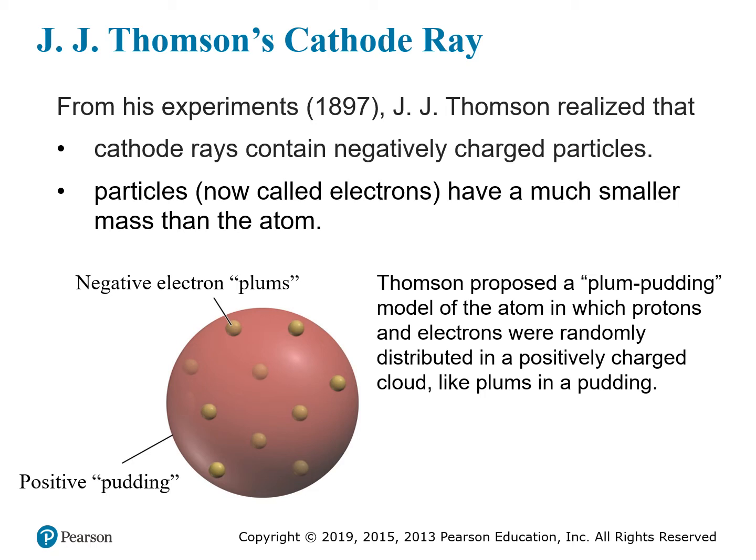Based on how these particle beams formed from the cathode and how they bent in a magnetic field, it was understood that these were negatively charged particles. It was also understood from the way they moved that they were very light — they did not have much mass at all. But they were still part of the atom. So there was some small, very light, low-mass piece of negative charge being pulled out of the atom as a result of this voltage, and this was determined to be a particle called an electron.